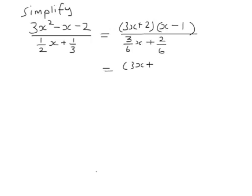So keeping the top bit the same, and then a sixth is a factor. And then we've got 3x plus 2 inside a bracket. And 3x plus 2 divided by 3x plus 2 is simply 1.